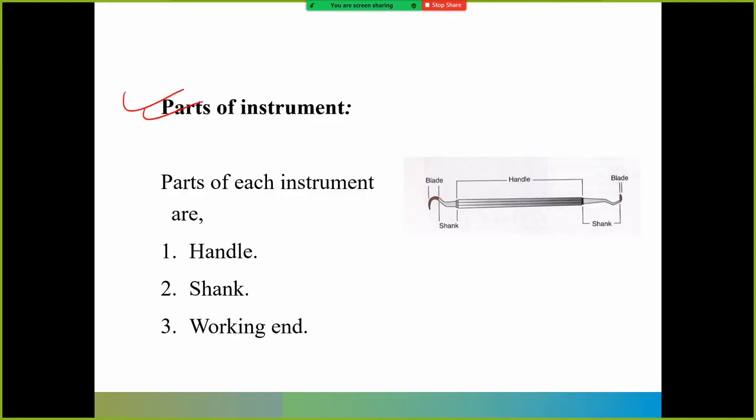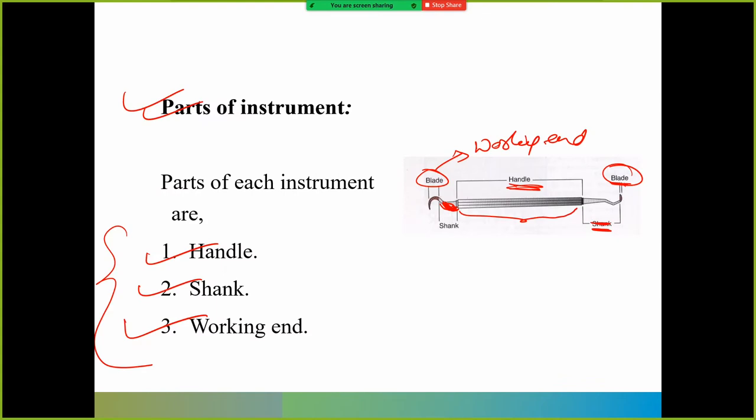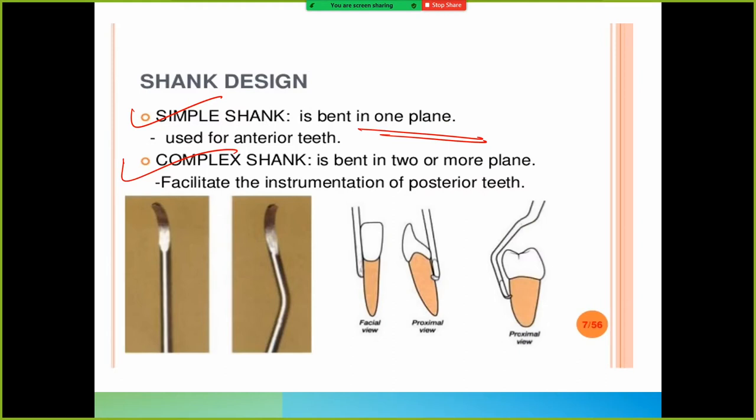Parts of instrument: We have got handle, shank, and the working end or blade. This is the working end, this is the shank, and this part is the handle. Handle, shank, and blade - the working end. You have to remember: simple shank is bent in one plane, but complex shank is bent in two planes. Simple shank is used for anterior teeth and complex shank is used for posterior teeth.